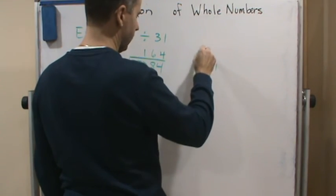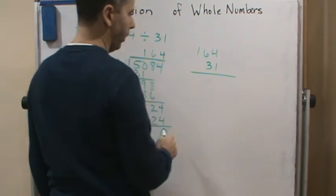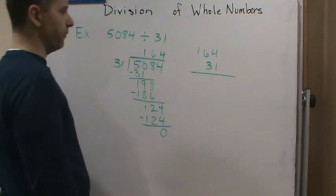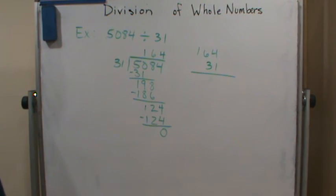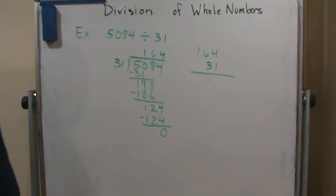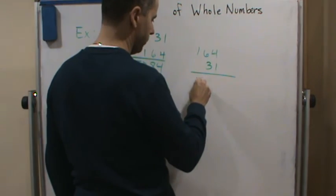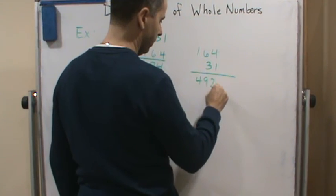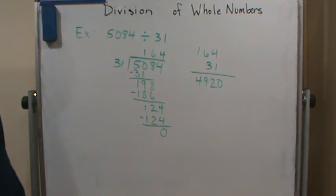So 31 times 164. Well, 3 times 164 is what? 492 plus 0, so 4920, right? So all I did was 3 times 1 is 3, 3 times 6 is 18, which gives me a 4 here.